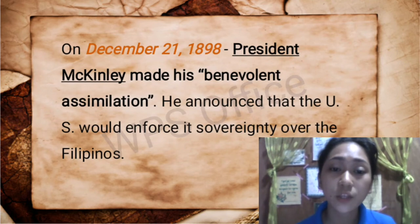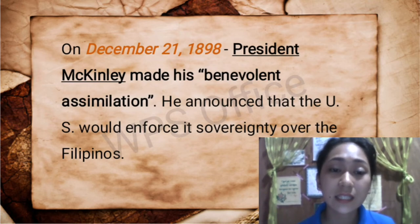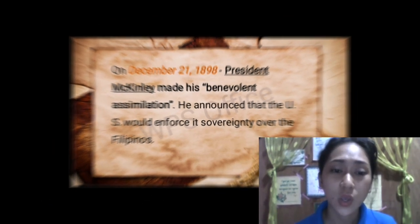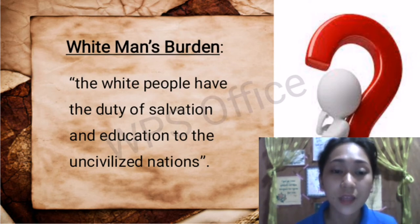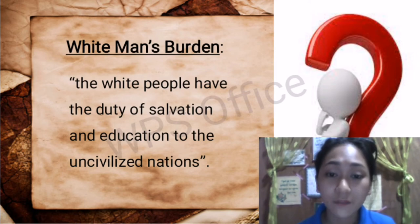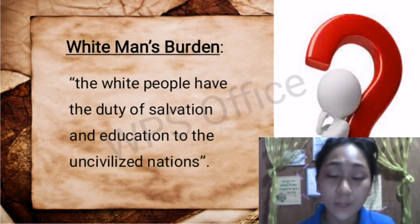To officially start the American occupation in the Philippines, on December 21, 1898, President McKinley made his benevolent assimilation proclamation, announcing that the U.S. would enforce its sovereignty over the Filipinos. The Americans believed in the white man's burden — that white people had the duty of salvation and education to uncivilized nations. Because they considered the Philippines as a nation that needed civilization, especially in education, they found it fitting to proclaim the benevolent assimilation.